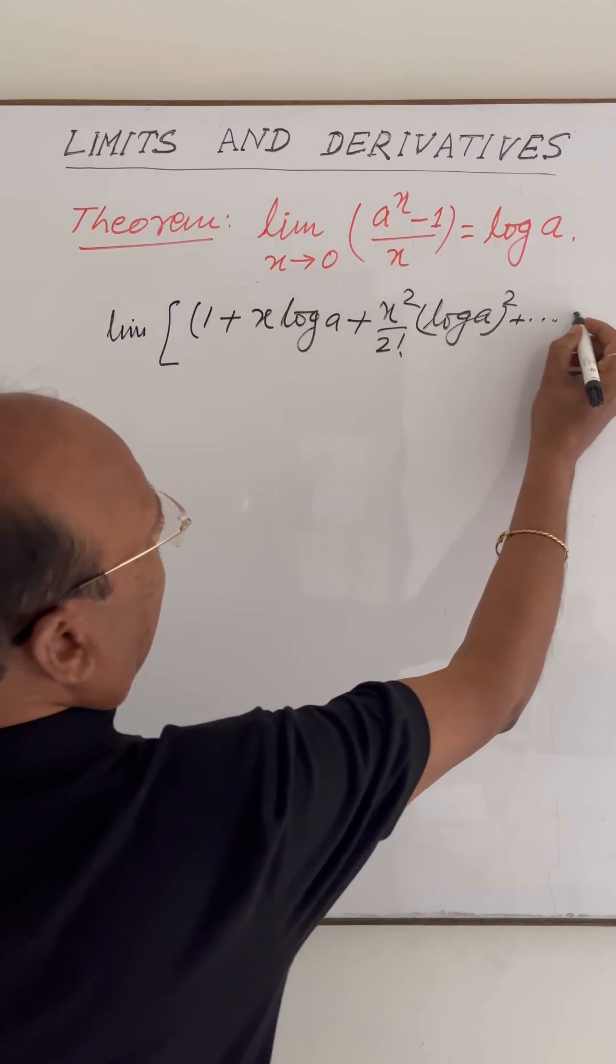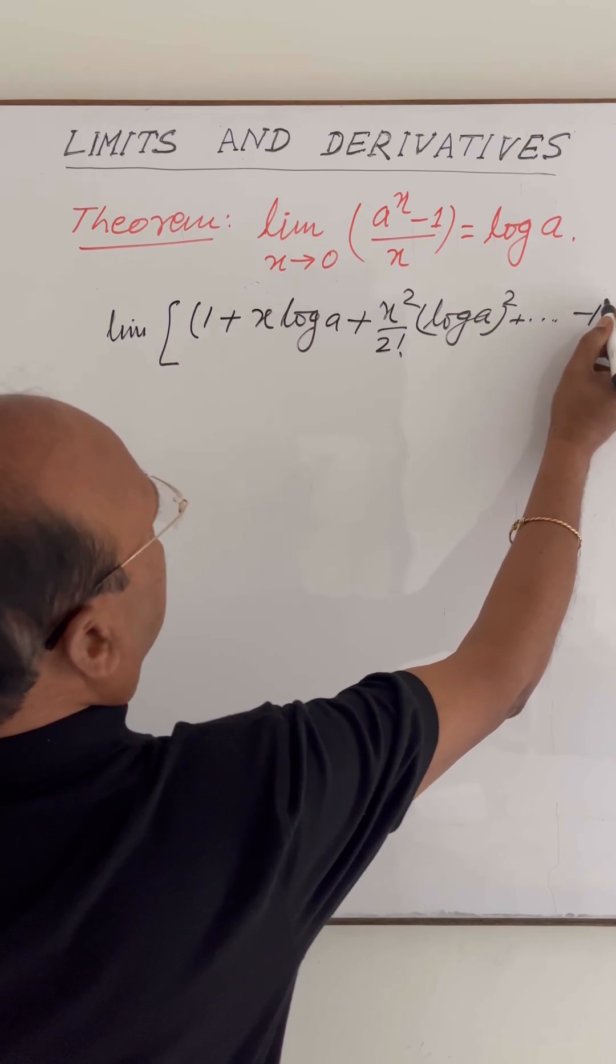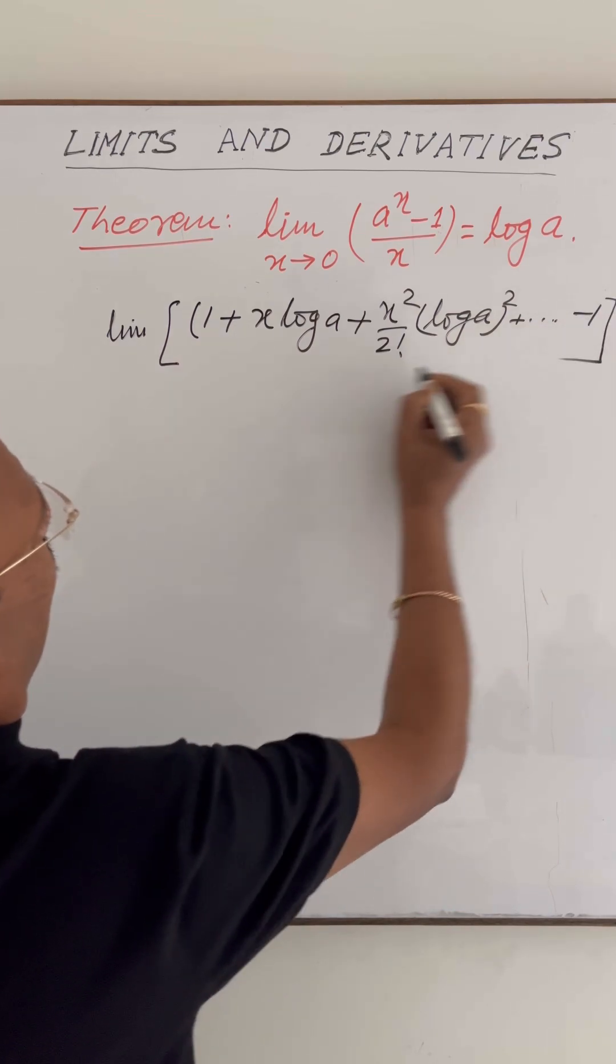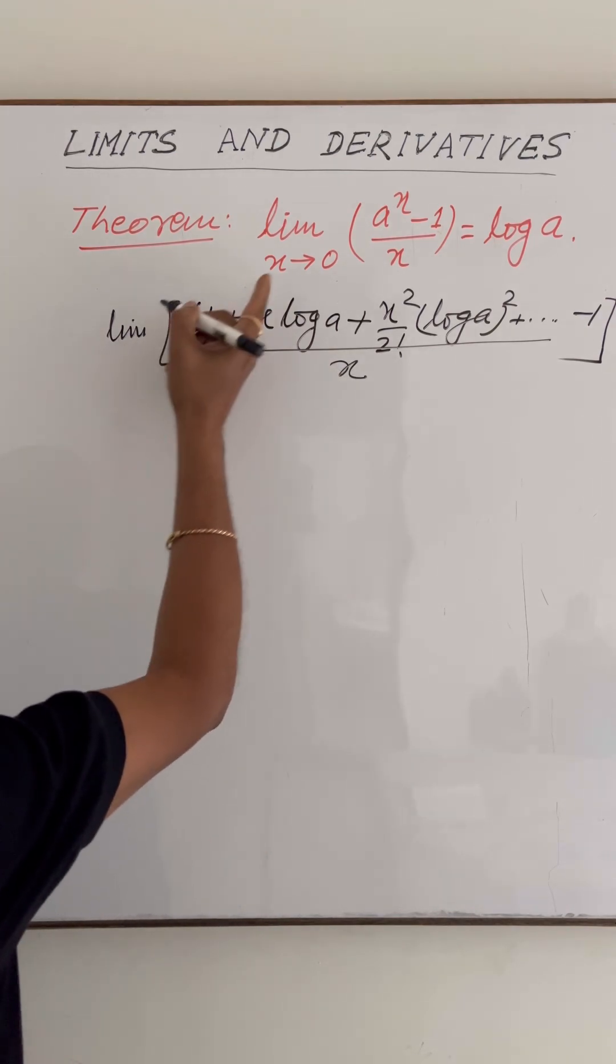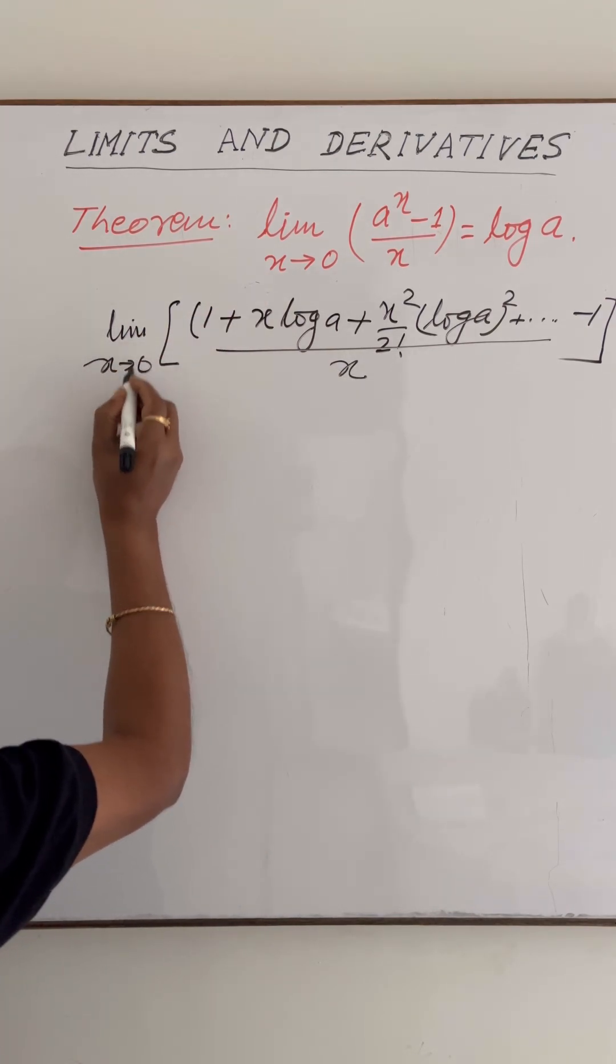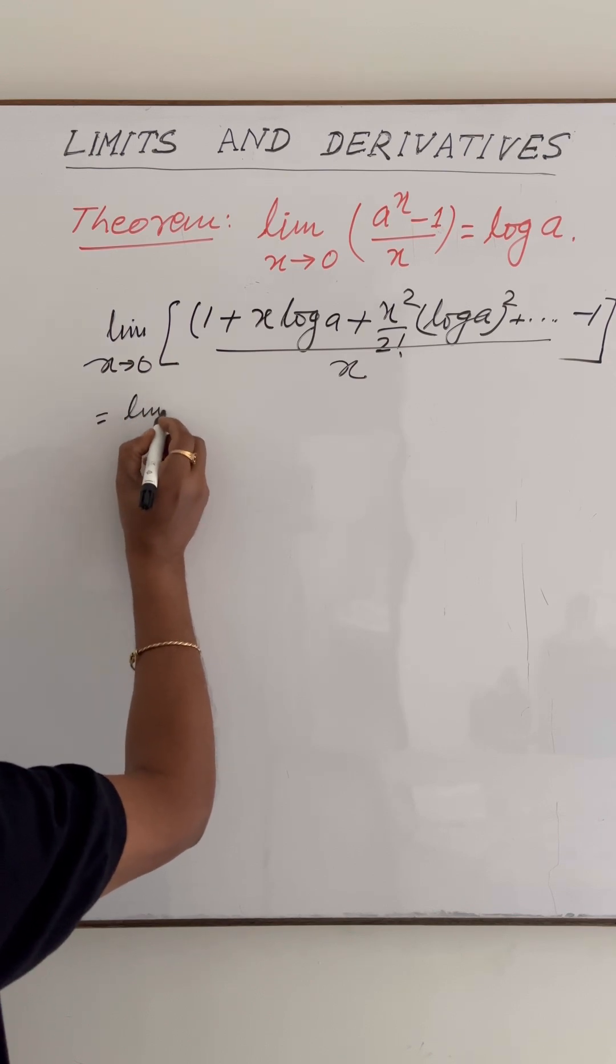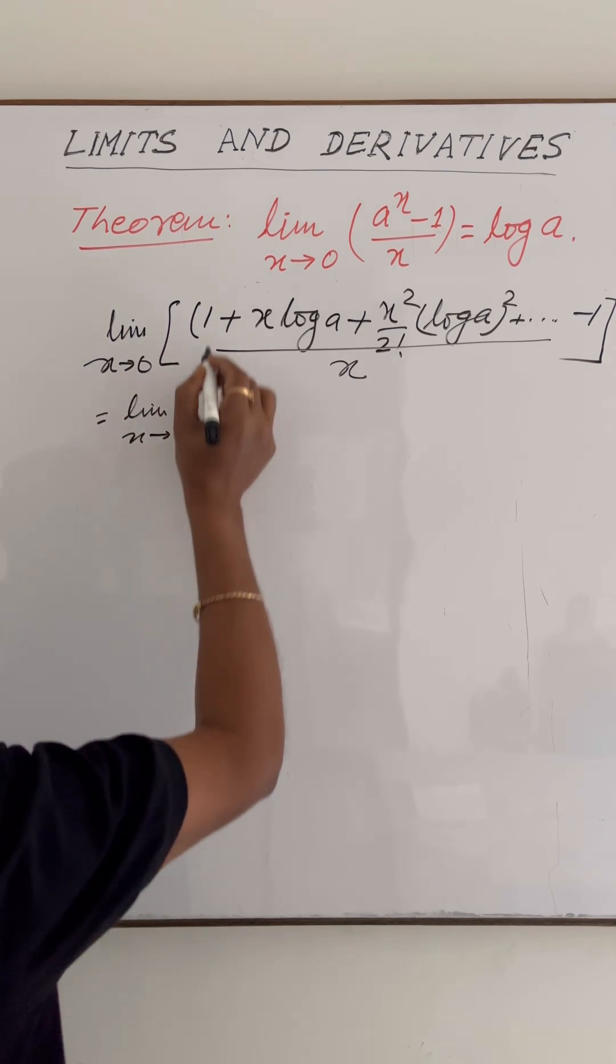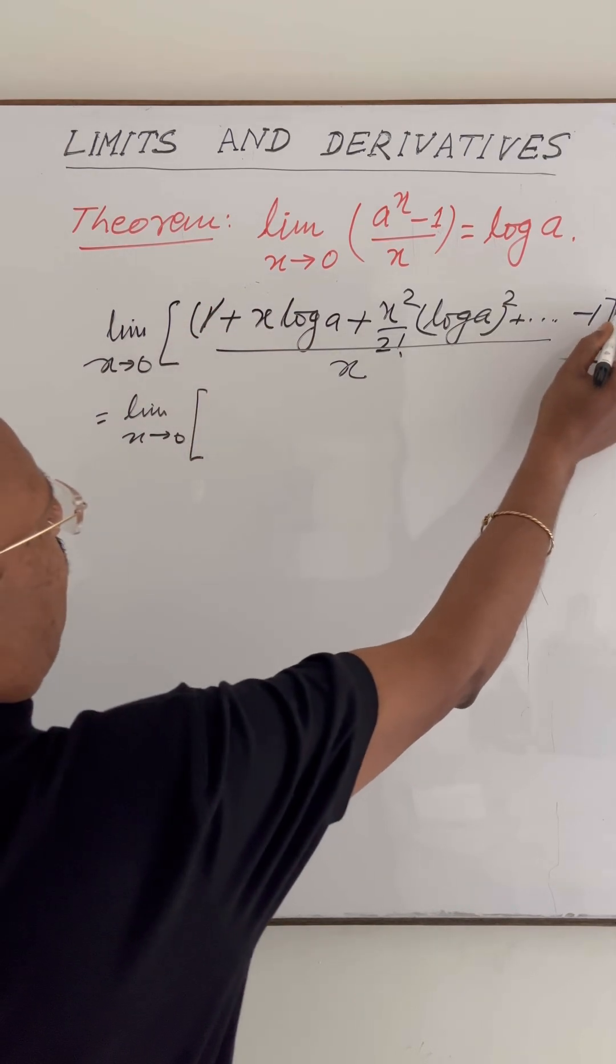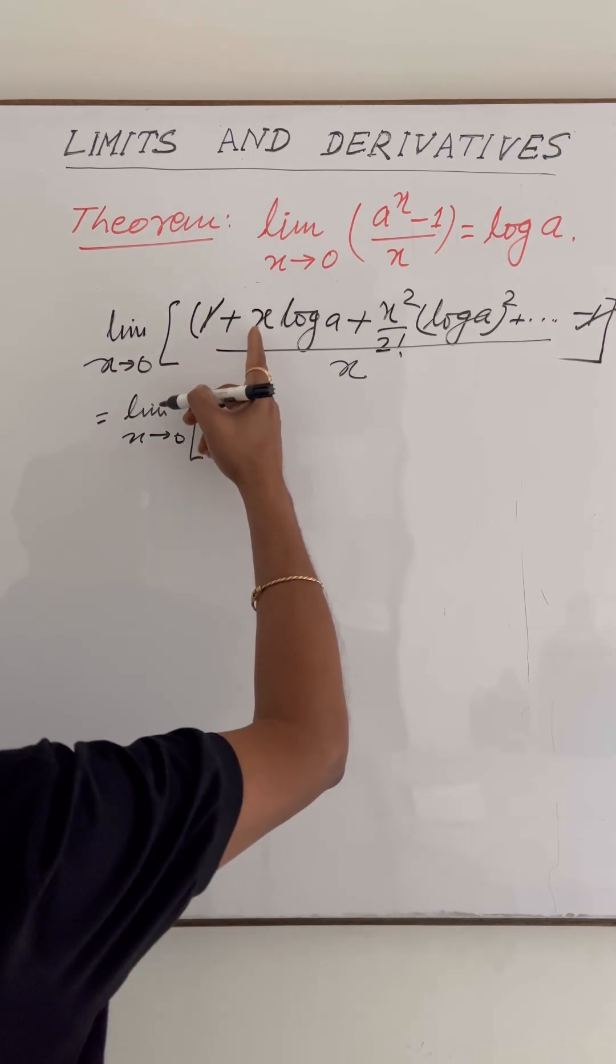So this is limit as x tends to 0. The plus 1 and minus 1 will be cancelled out, and we can take x common from all the terms.